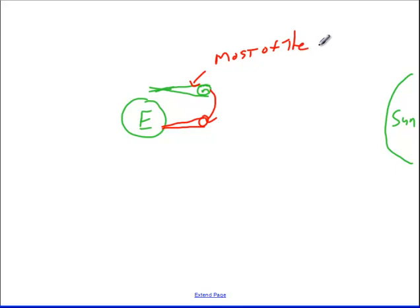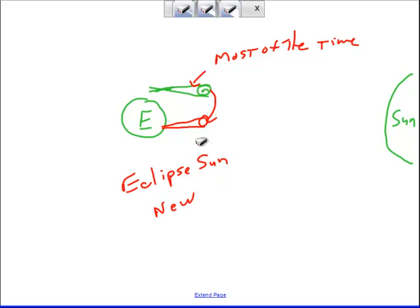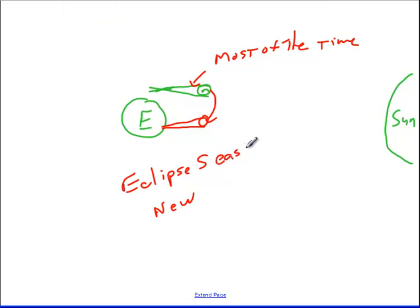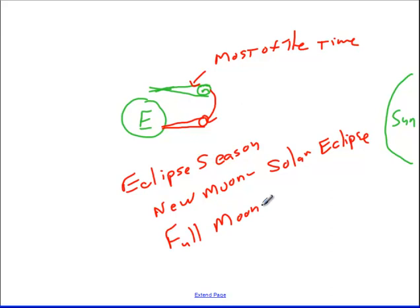During the seasons, what we call the eclipse season, when the Earth, the moon, and the sun are all lined up, if we happen to get a new moon, then we get a solar eclipse visible somewhere on the Earth. If we get a full moon, then we would have a lunar eclipse somewhere on the Earth. That doesn't mean it would be visible from where you happen to be.